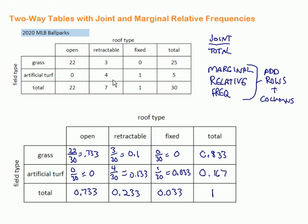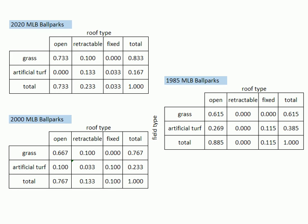I was thinking about this and thought, let's take this a little bit further. What I did is I came up with the joint and marginal relative frequencies for the ballparks in 2000 and in 1985 and wanted to see how those things compared. Here's a nice version of that table. Here's the 2000, here we have 1985. Something I want you to notice: what do you notice?